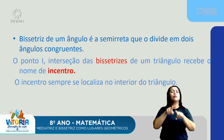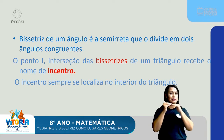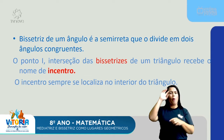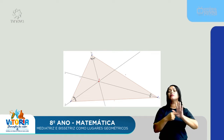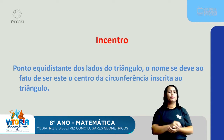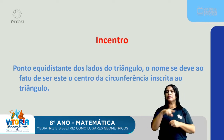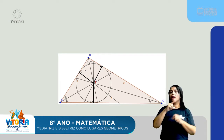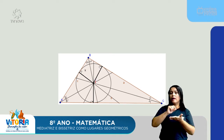A bissetriz de um ângulo é a semirreta que divide em dois ângulos congruentes — ou seja, iguais. O ponto de interseção das bissetrizes de um triângulo recebe o nome de incentro. O incentro é o ponto equidistante dos lados do triângulo, sendo o centro da circunferência inscrita no triângulo. Aqui eu tenho um triângulo e dentro dele uma circunferência, e o centro dessa circunferência chamo de incentro.